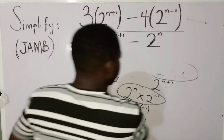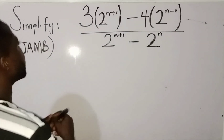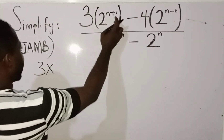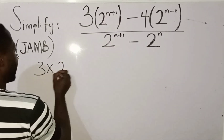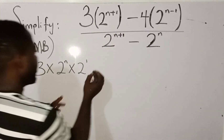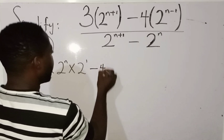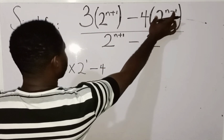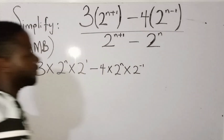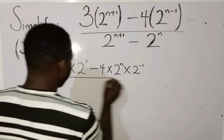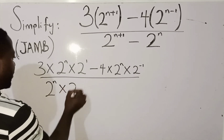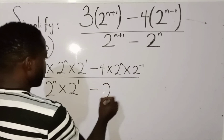Now, the first thing I am going to do is to expand. I am going to say 3 multiplied by what you have in the bracket. Don't forget, what you have in the bracket is 2 raised to power n multiplied by 2 raised to power 1. Then we have minus 4 multiplied by this — and don't forget, this simply means 2 raised to power n multiplied by 2 raised to power n multiplied by 2 raised to power 1. That is for the numerator. For the denominator, it simply means 2 raised to power n multiplied by 2 raised to power 1 minus 2 raised to power n.